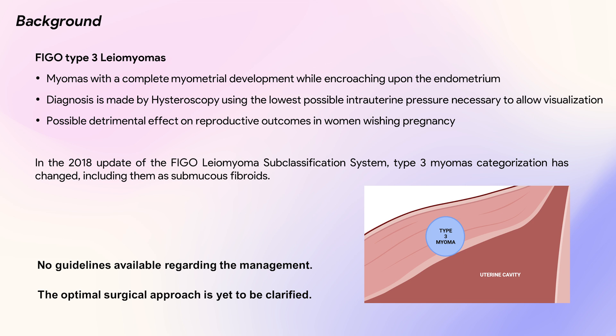In the 2018 last update of the FIGO leiomyoma subclassification system, the classification of type 3 myomas has changed, now categorizing them as submucous fibroids. Nevertheless, there are currently no guidelines available for the management of type 3 myomas, and the optimal surgical approach is yet to be clarified.